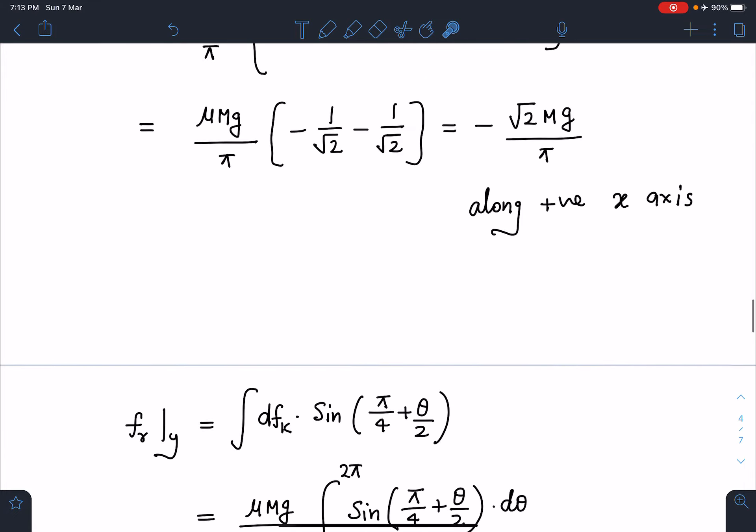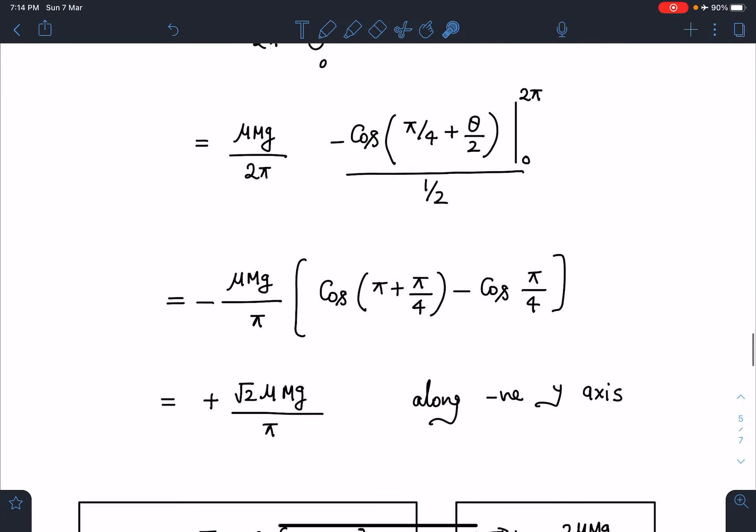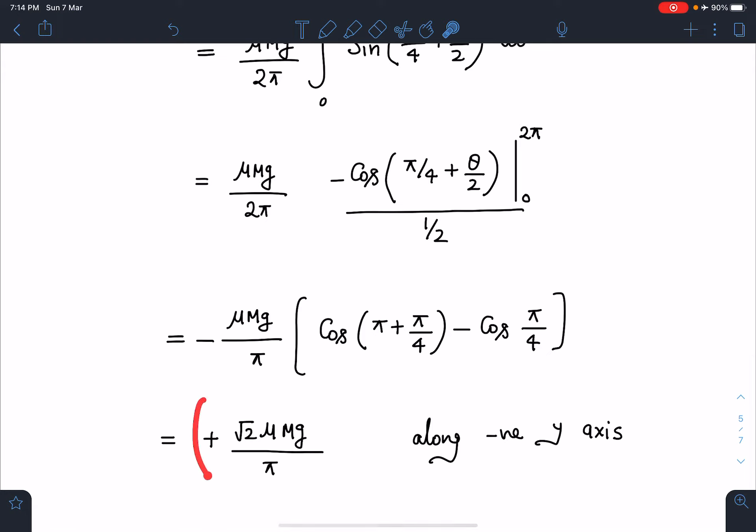Similarly, I can do the same thing for friction in y-direction. This becomes very easy and it is along the minus y. So dfₖ sin(π/4 + θ/2). When I integrate it 0 to 2π, similar type of function will come. When we simplify this, I will be getting √2 μMg/π, which is definitely along the minus y-axis.